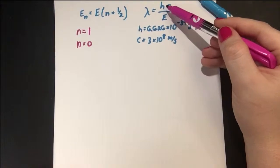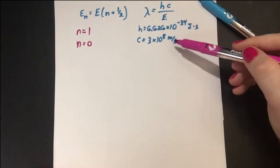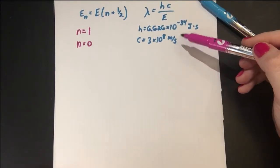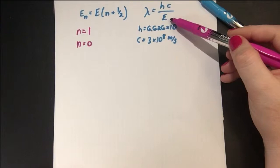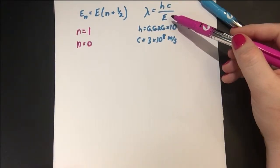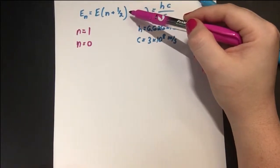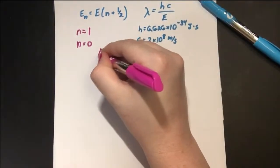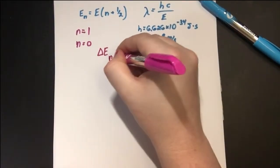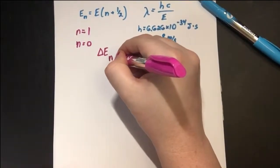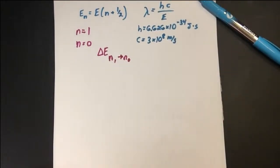h is Planck's constant, which is a constant value, and c is the speed of light, which is also a constant value. So those two values are given. To find the wavelength, all we need to do is find the energy of the photon. We can find the energy of the photon by finding out how much the change in energy is to go from n = 1 to n = 0. So let's take a look at this.